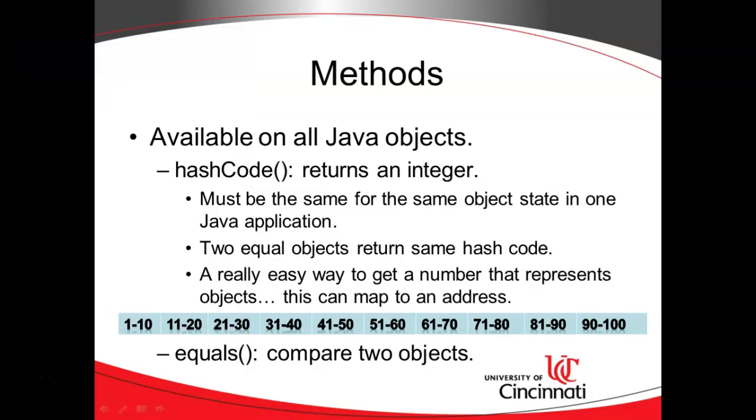Once we come up with that number, we simply divide by the number of buckets that are represented by a HashMap, and then we can find the exact bucket where this object needs to be stored. The idea is that this hash code is an easy way to find an address where we can store this object.